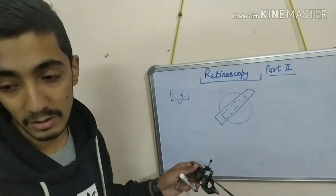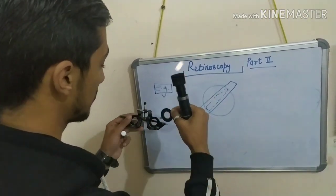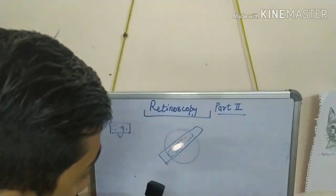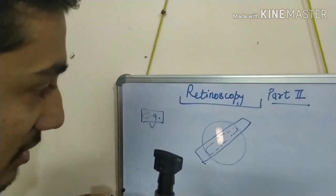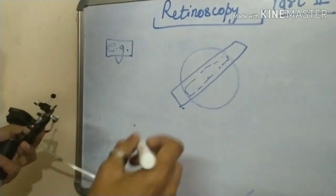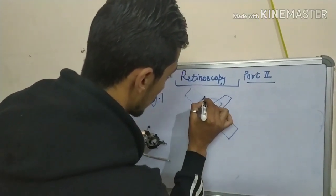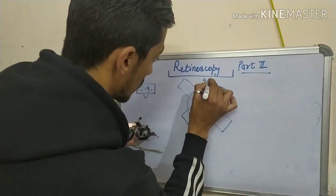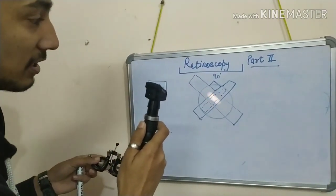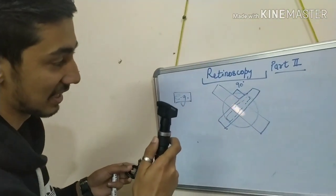Now you neutralize. For example, this meridian is neutralized with the sphere — for example, plus 3.75. You put plus 3.75 in the trial frame and neutralize in this meridian. Now you have to rotate the slit 90 degrees apart. This is the slit at 90 degrees apart at this meridian. For example, at this meridian, you move the slit 90 degrees apart. Now you have to neutralize in this meridian with the cylindrical power. For example, here the movement is against movement. You find the against movement here and neutralize it with the cylinder.